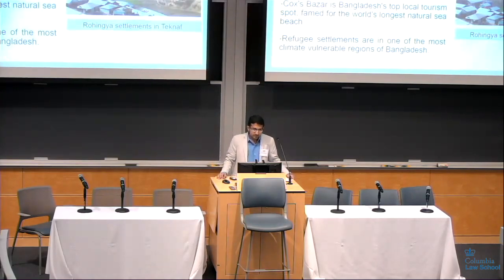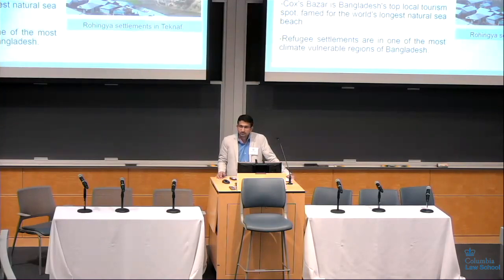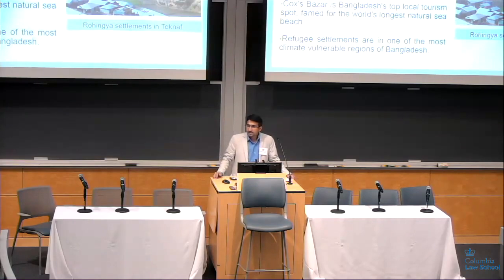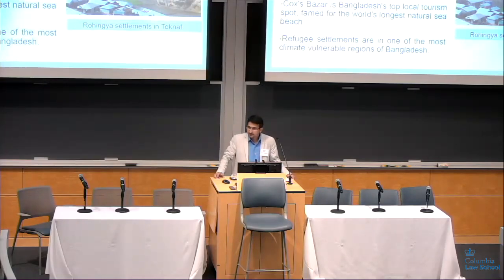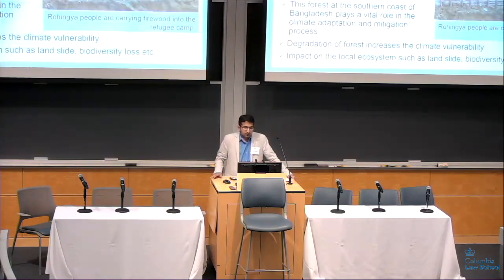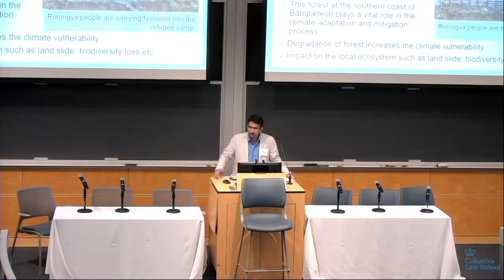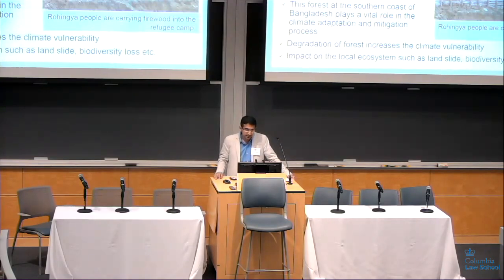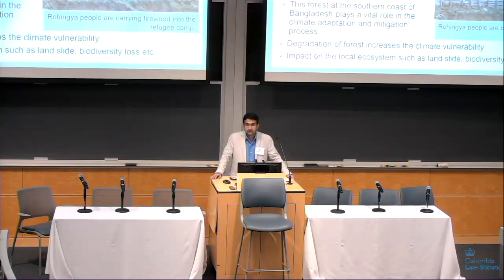Some background on the Rohingya crisis: the latest refugee influx began on 25th August 2017, and now approximately 655,000 refugees have settled in Bangladesh, most of them in the Teknaf and Ukhia sub-districts. These areas are part of the Cox's Bazar region, the most popular tourist spot in Bangladesh and famous for its longest natural sea beach. This region is also one of the most climate-vulnerable regions in Bangladesh. When Rohingya people came, massive deforestation was observed due to rapid expansion of refugee settlements and their practice of cutting trees for firewood for cooking purposes.